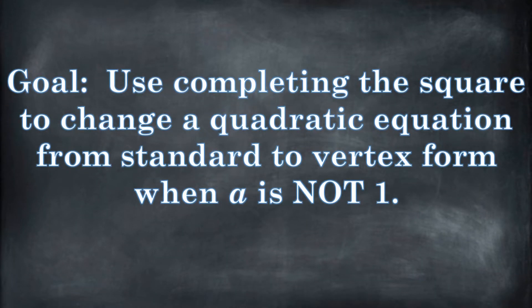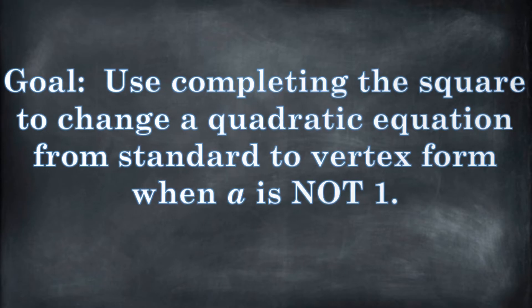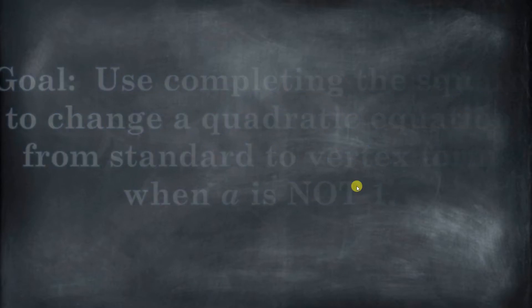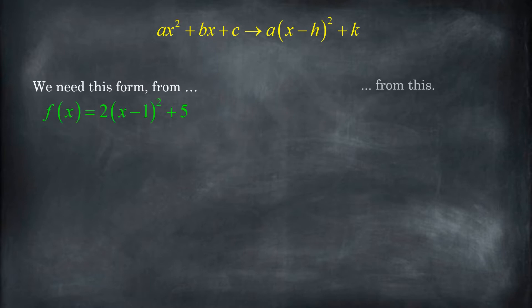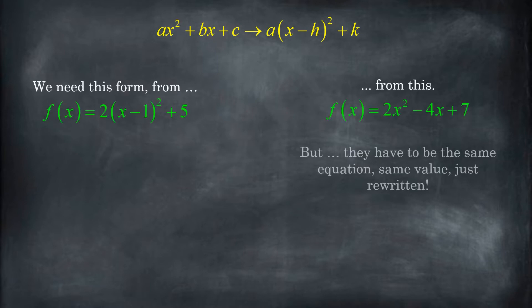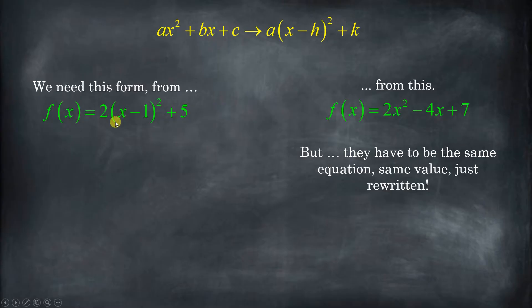Can we complete the square when a isn't 1? Can we take ax squared plus bx plus c and change that into vertex form? So we're going to take something like 2x squared minus 4x plus 7 and we need to get that into vertex form — 2 times x minus 1 squared plus 5. We need to get that from 2x squared minus 4x plus 7. So that's what I'm going to show you how to do.